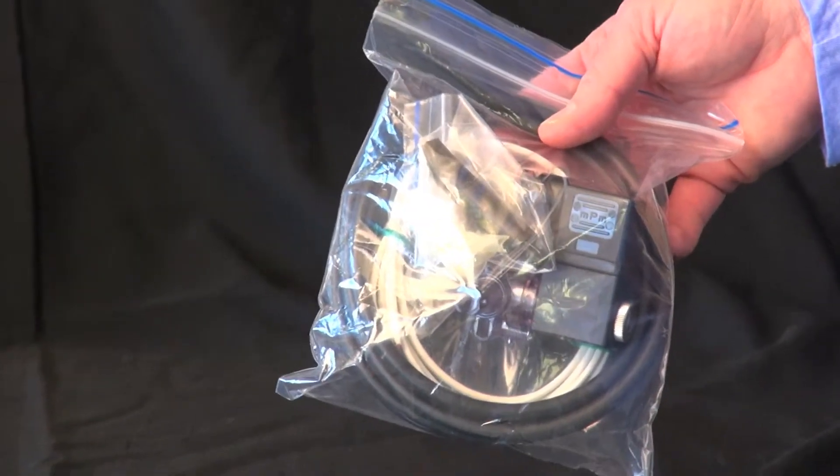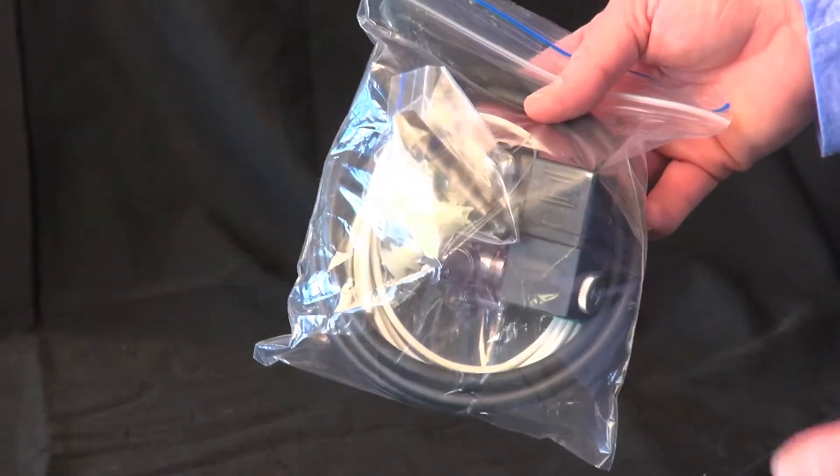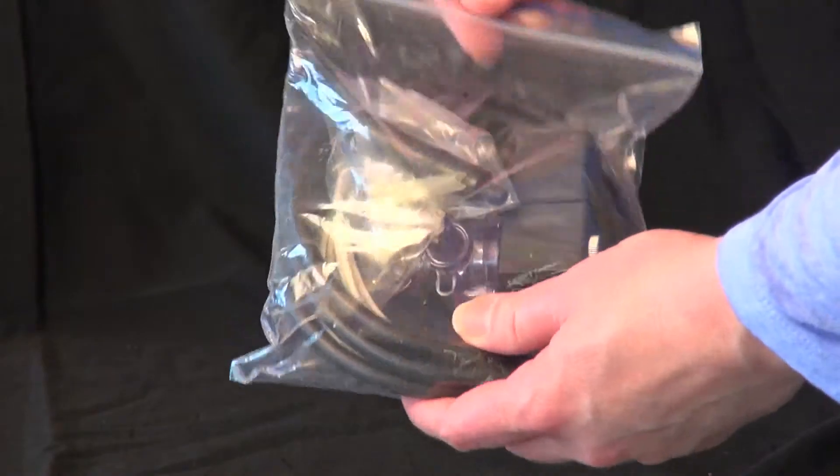So when you purchase a solenoid and you need to mount it for your pH mini doser or your intellidose, this is what you'll receive.